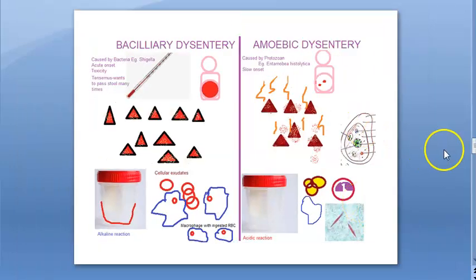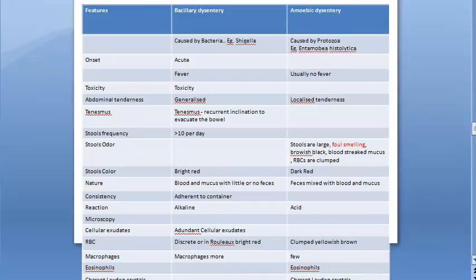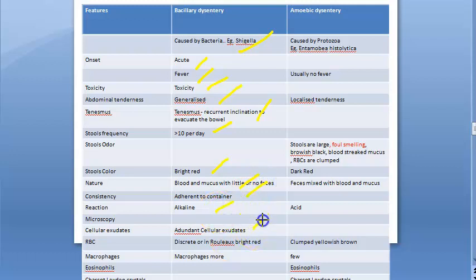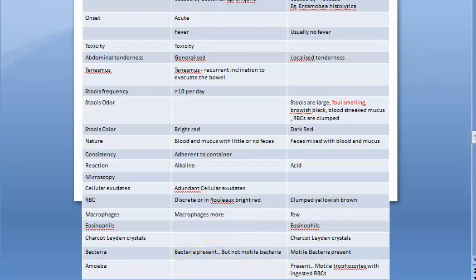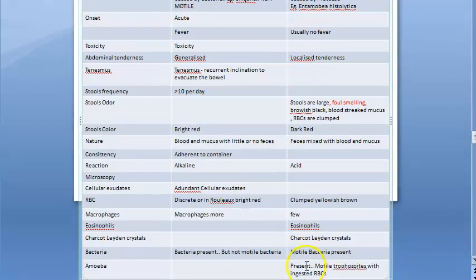Now looking at the tabular form. Bacillary dysentery: caused by bacteria, acute in onset, fever present, toxicity present, generalized abdominal tenderness, tenesmus present. Stools: frequency greater than 10 per day, color bright red with blood and mucus, less feces, sticks to the container, alkaline reaction. Microscopically: abundant cellular exudates, RBCs discrete or in rouleaux formation, macrophages more. Also note that motile bacteria are not present because Shigella is non-motile.